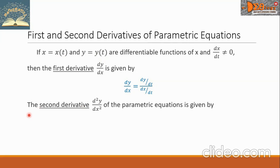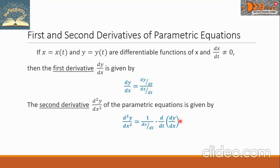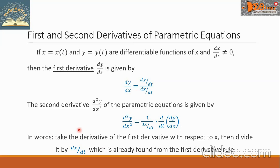The second derivative of the parametric equations is given by: 1 over (dx over dt) times d over dt of the first derivative dy over dx. In words, take the derivative of the first derivative with respect to t, then divide it by dx over dt, which is already found from the first derivative rule.